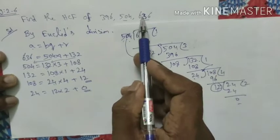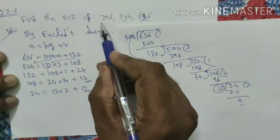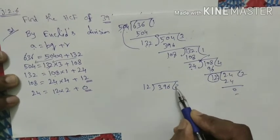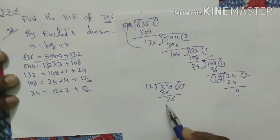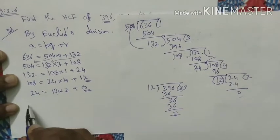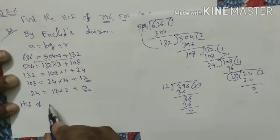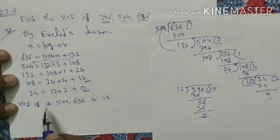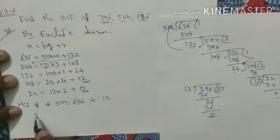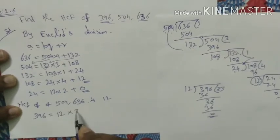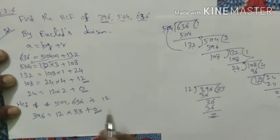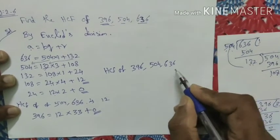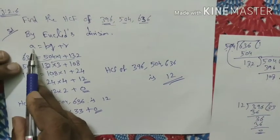The remainder becomes 0, so the highest common factor of 636 and 504 is 12. Now we divide the third number 396 by 12: 12 goes 33 times into 396, with remainder 0. So the overall HCF of 396, 504, and 636 is 12.